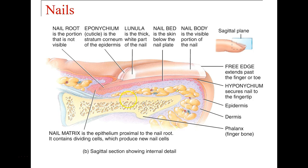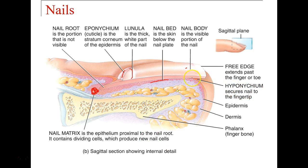In a sagittal view we can see the free edge, nail body, and the nail bed, which is underneath the nail body. The lunula is that little half-moon. The cuticle is that small fold of epidermis. The nail root is embedded in the skin. The nail matrix is where we actually produce the cells that make the nail. The hyponychium is where we anchor the end of the nail to the finger.